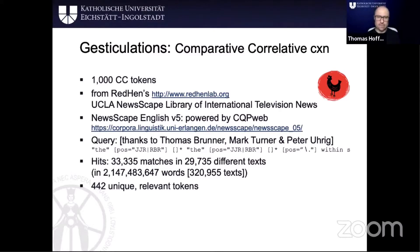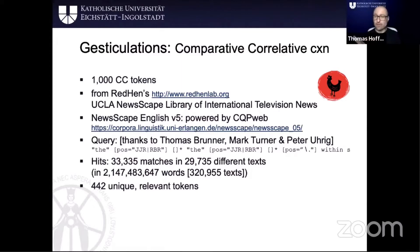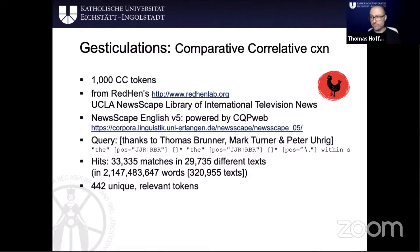The queries use CQP, the interface that Peter Ulrich has developed. You could look at potentially more than 30,000 hits in more than 29,000 texts. All in all, I ended up with a random sample of 1,000 tokens, out of which 442 were unique relevant tokens, because some were repeated — if you had a rerun of a show it would come up twice. I wanted to look at spontaneous gesture, so each individual instance of a repeated TV show was only taken into account once.